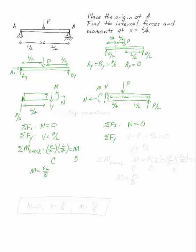Sum of the forces in Y says V minus P plus P over 2 equals 0, which gives us V equals P over 2. That's what we had before.